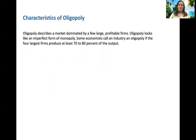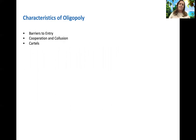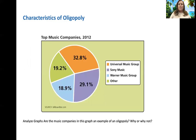Let's look at some examples. Here are music companies: you've got Universal, Sony, and Warner. They're the top three and they've got 70 to 80 percent of the market, with everybody else making up that remaining 19.2 percent.